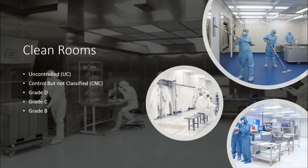Cleanrooms consist of the following classifications: Grade A, Grade B, Grade C, and Grade D. Controlled but not classified areas are called CNC. Most of the background of Grade D areas are CNC. The external environment is called an uncontrolled area.